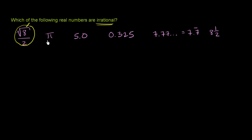Now you have pi. 3.14159 just keeps going on and on and on forever without ever repeating. So this is irrational, probably the most famous of all of the irrational numbers.